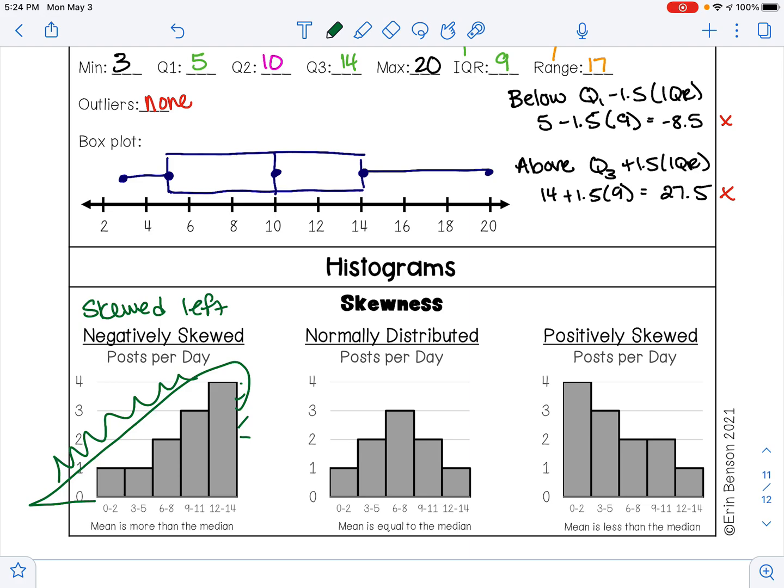Here we have a normally distributed histogram, so our mean is equal to our median. This is when we have a bell-shaped curve.